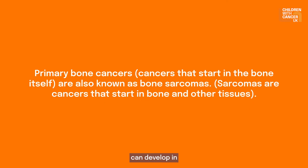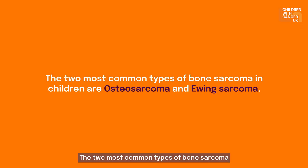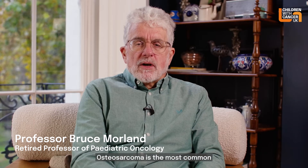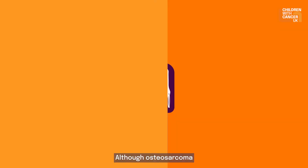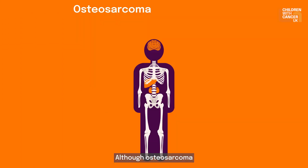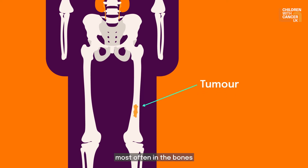Bone sarcomas can develop in any of the bones of the skeleton. The two most common types of bone sarcoma in children are osteosarcoma and Ewing sarcoma. Osteosarcoma is the most common type of bone cancer in children. Although osteosarcoma can develop in any bone, it occurs most often in the bones on either side of the knee and in the upper arm.